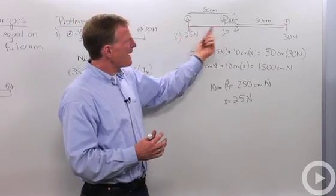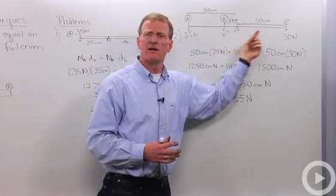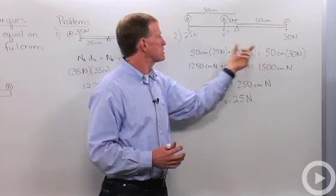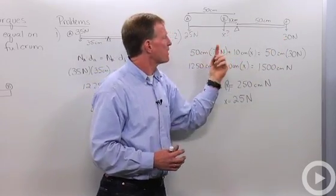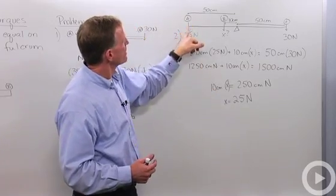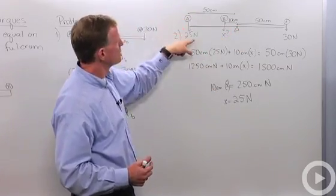We can just add these torques together, and they're going to equal this torque. So let's put these two on one side, and it's going to equal that one. My distance for my first force is 50 centimeters from the center, applying a force of 25 newtons, so 50 times 25 newtons.